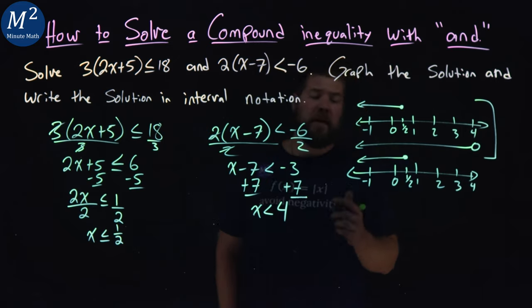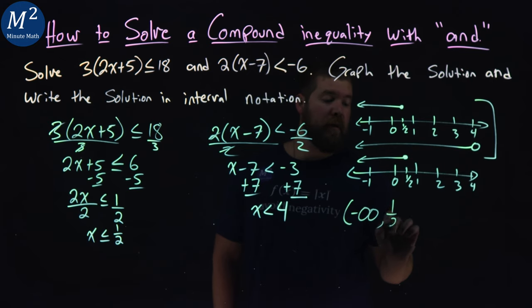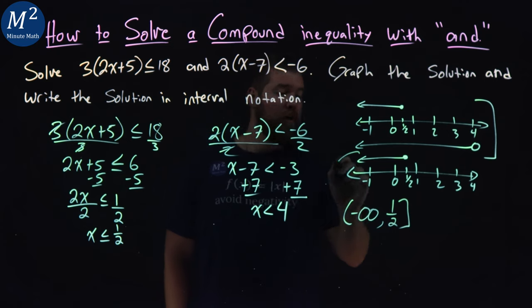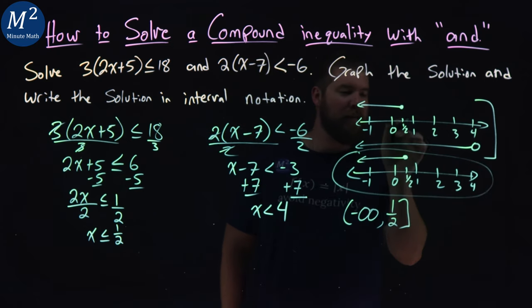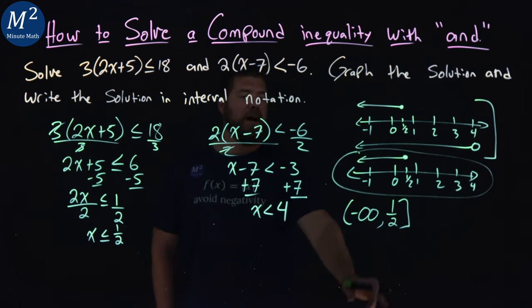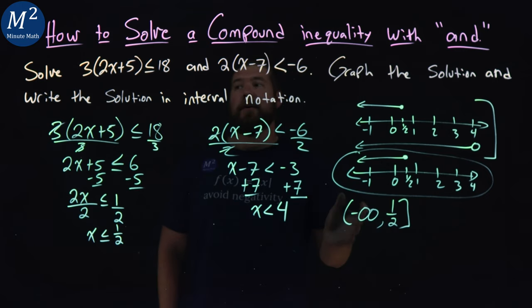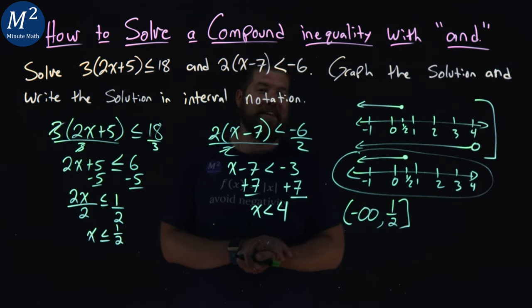So if I write this in interval notation, I start with the left, negative infinity, and it goes all the way up to 1/2, our highest value, but we have a bracket there because it's equal to. And there we have it. We have our graph here, which I can circle because I know it gets a little confusing here. There's the graph, and here is our inequality, and that's how we solve that compound inequality.